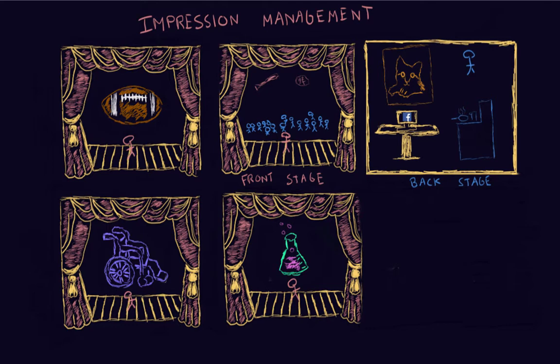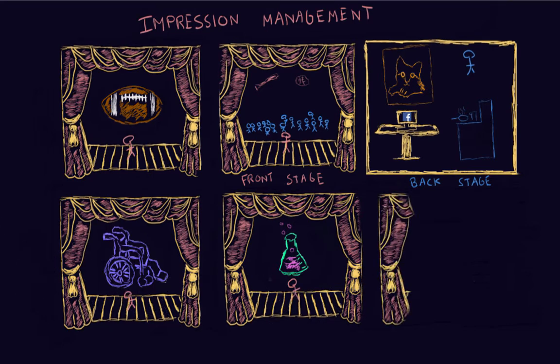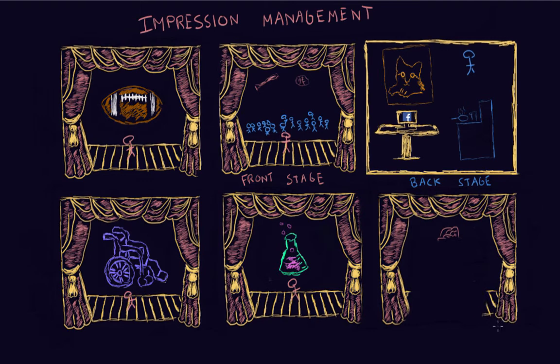He tells the professor, 'I'm really interested in research, I'm a very curious student.' His plan the whole time is to just get that letter of recommendation. After that, he's really excited because he finally worked up the courage and asked out a girl he's had a crush on for a long time — he'd really been building up to it and finally did it.